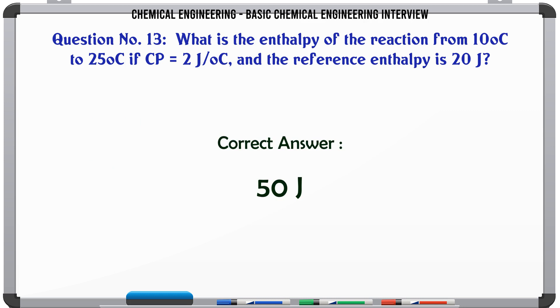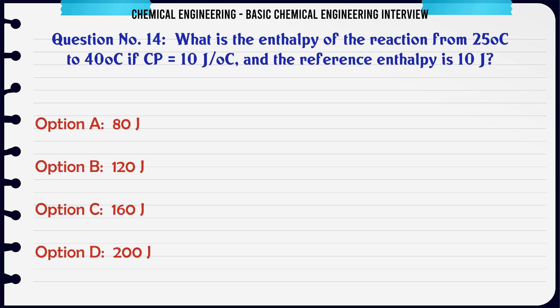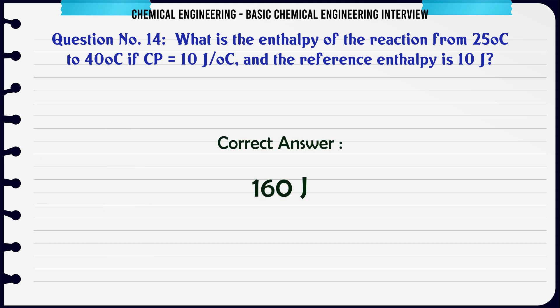What is the enthalpy of the reaction from 25°C to 40°C if Cp = 10 J/°C and the reference enthalpy is 10 J? A) 80 J. B) 120 J. C) 160 J. D) 200 J. The correct answer is 160 J.